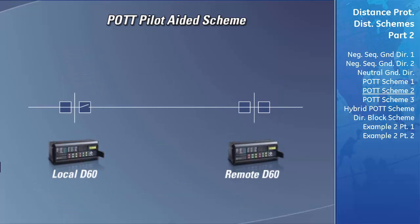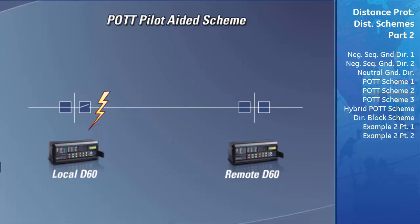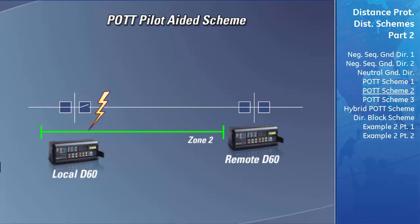The POTT scheme has one more feature to speed up tripping of a faulted transmission line. If the breaker on the local end is open, the local D60 will not detect any current flow into the transmission line and will not detect any faults within its zones of protection. If a fault occurs on the line, no key would be sent to the remote D60. If a fault occurred in the remote D60's end zone, the remote D60 will detect the fault in its zone 2 and send the POTT key; however, the local D60 will not send a key because it does not see the fault in one of its zones of protection.